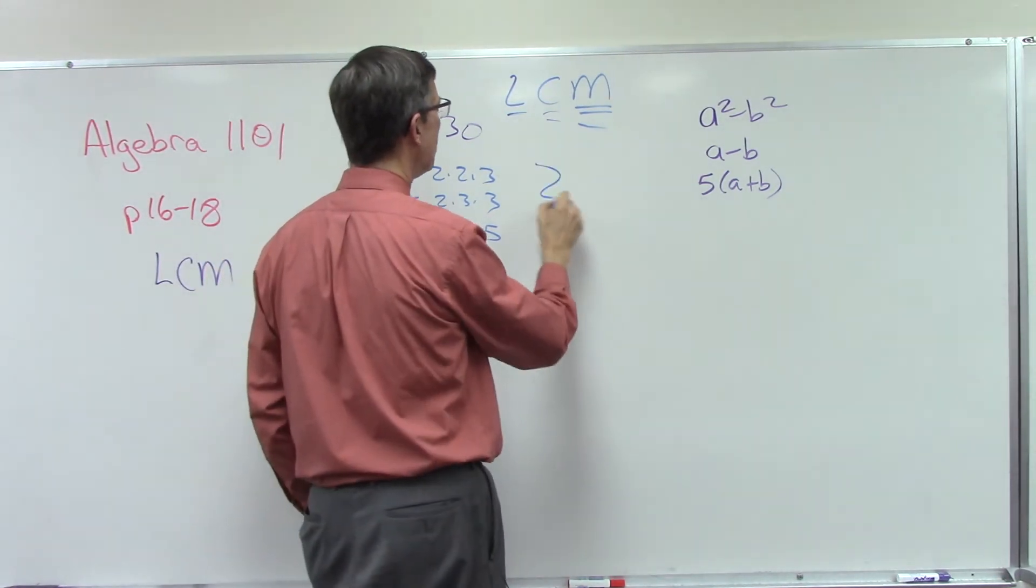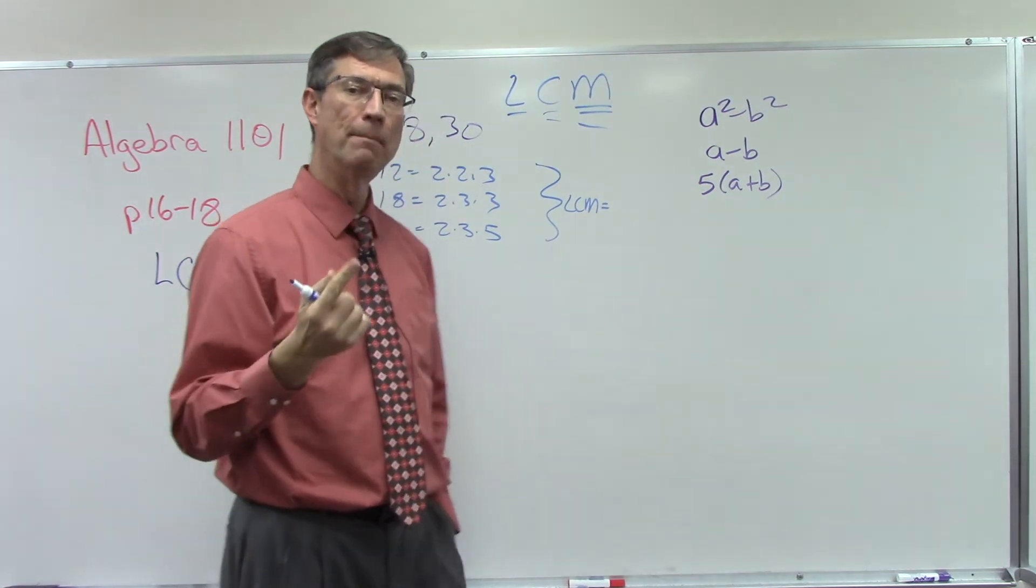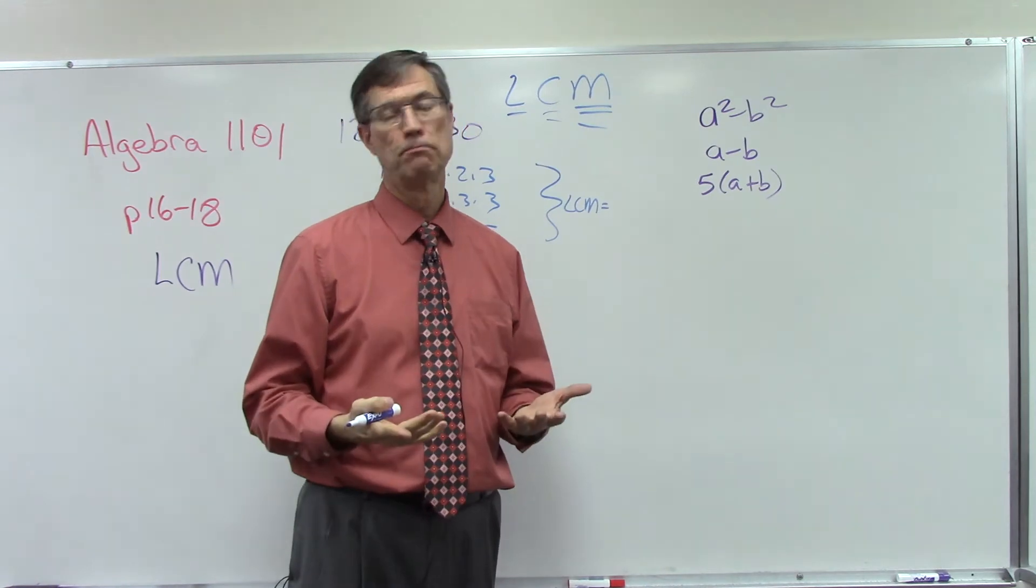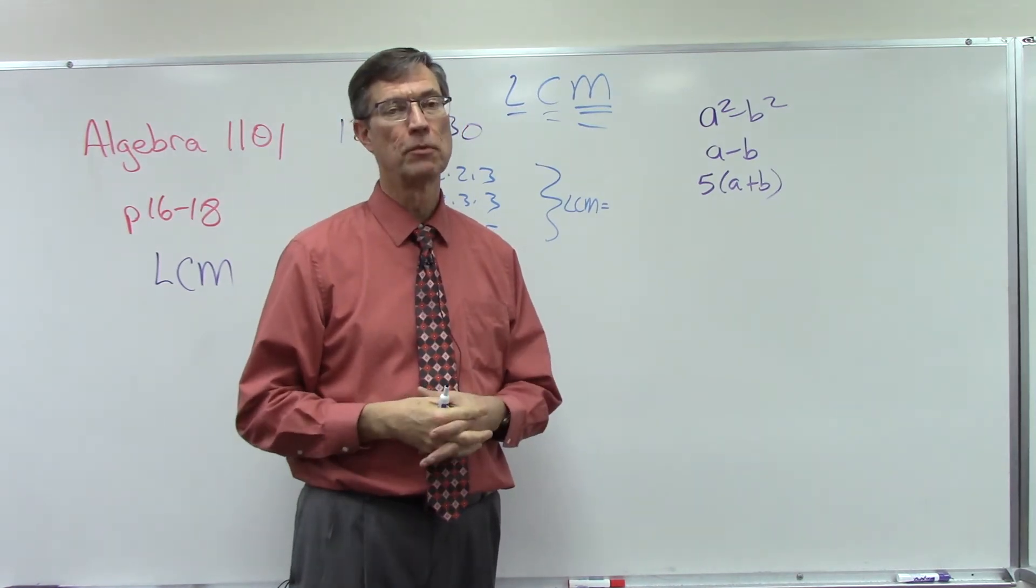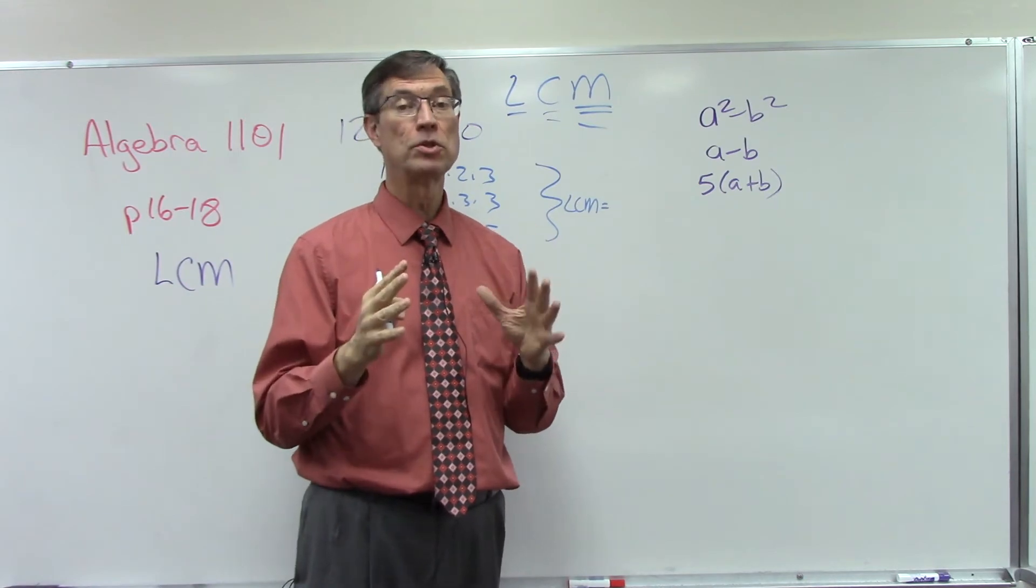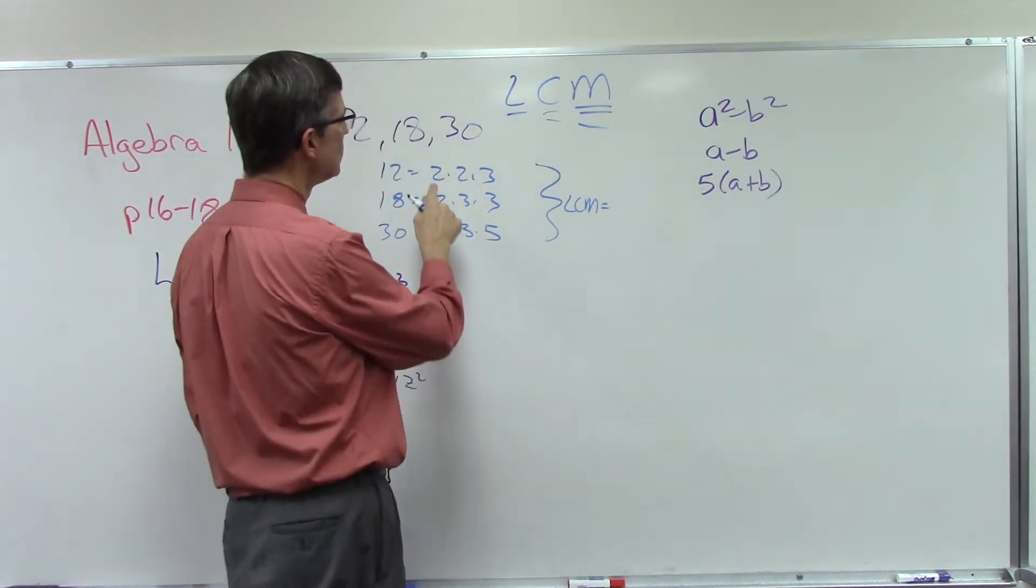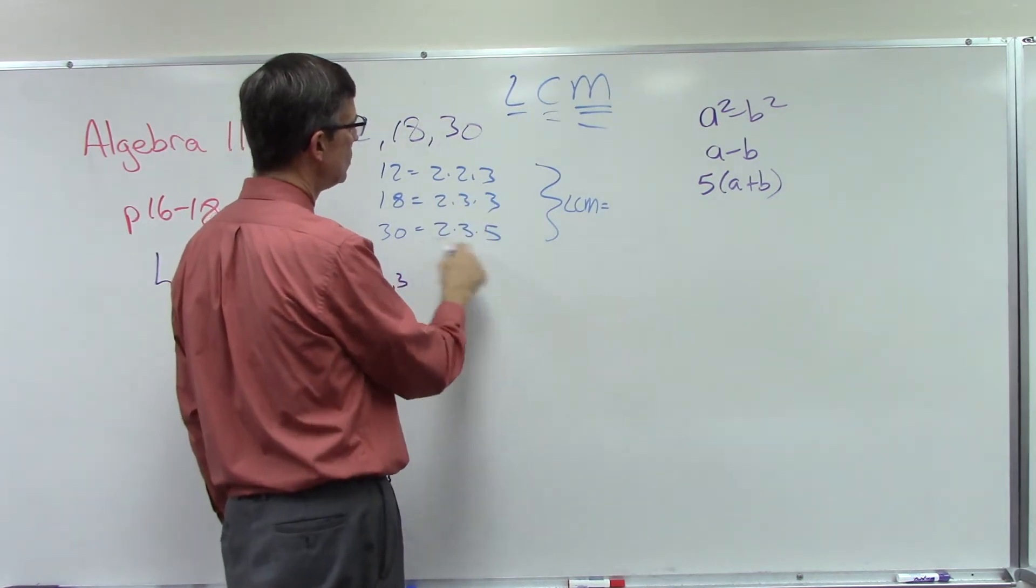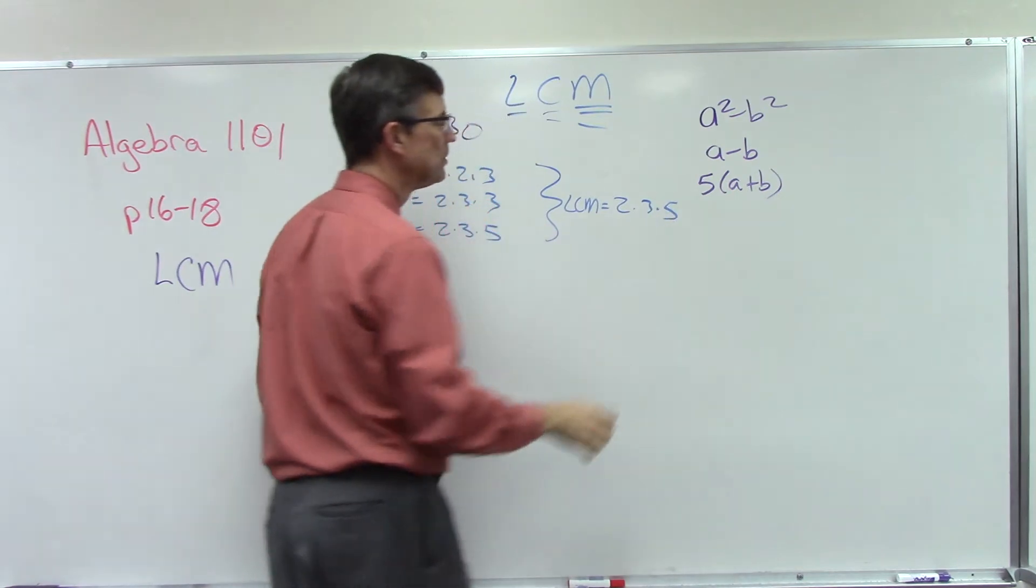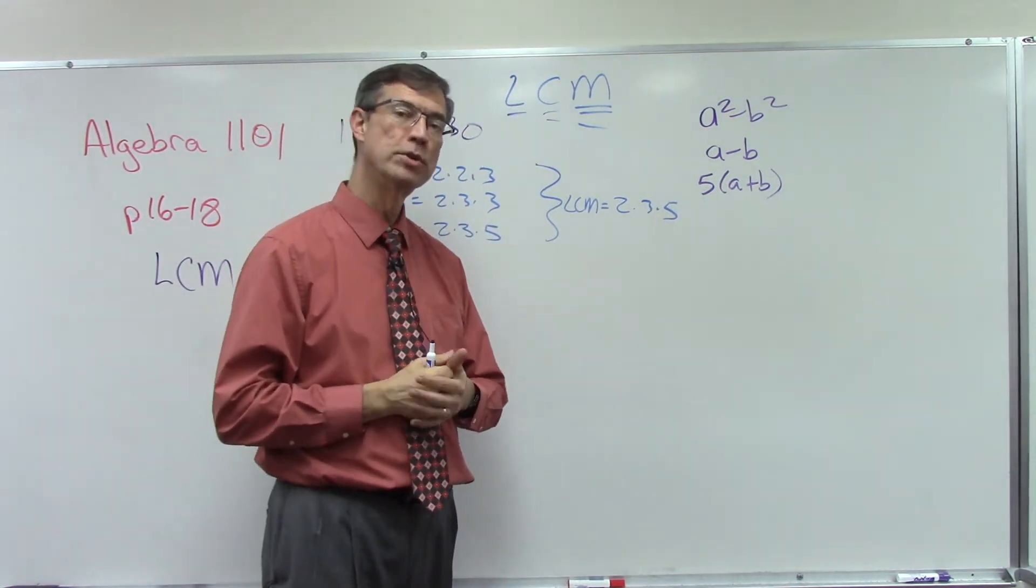Now how do I come up with the least common multiple? I'm going to take every number. Later when we do variables, we're going to take every variable, and it might even be a quantity. We take every factor that's used in any of them. So we have a 2 that's used, we have 3 that's being used, and we have 5 that's being used.